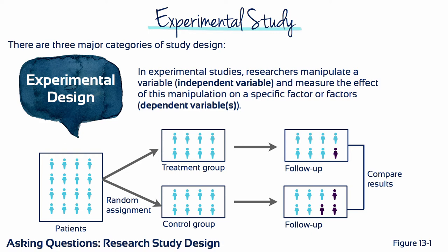Experimental studies are randomized controlled studies or randomized controlled clinical trials. These studies have a dependent and an independent variable. It is easy to remember the difference between the two because the quantity of the dependent variable depends on whether the subject was in the experimental group or the control group — in other words, it depends on the level or amount of the independent variable that the subject was exposed to.